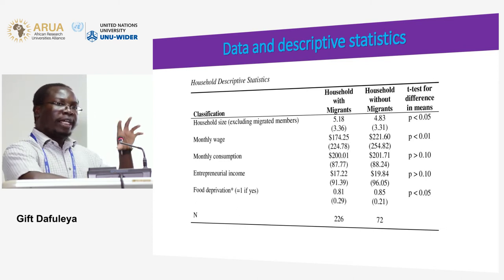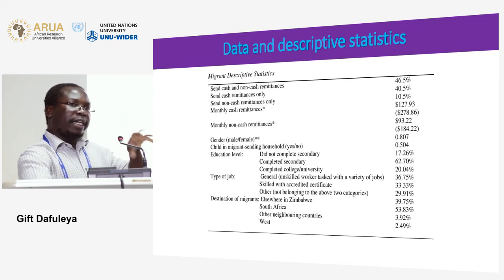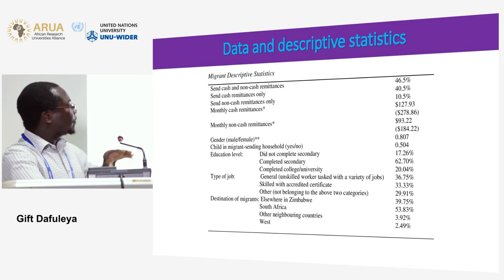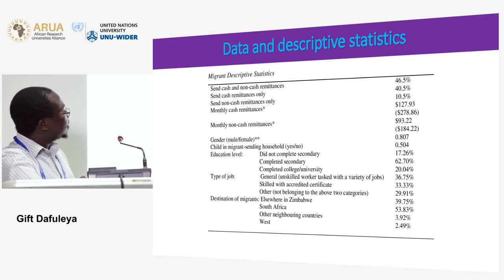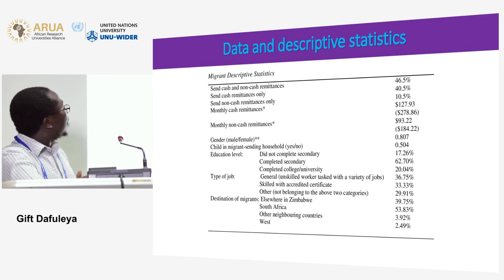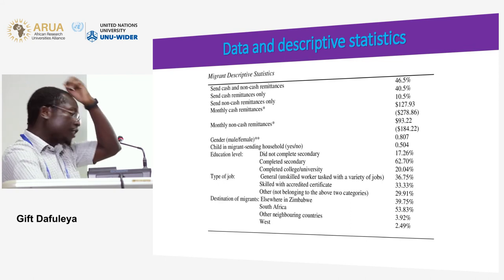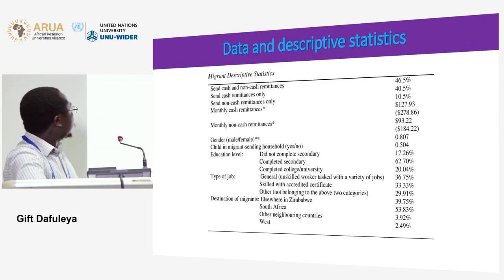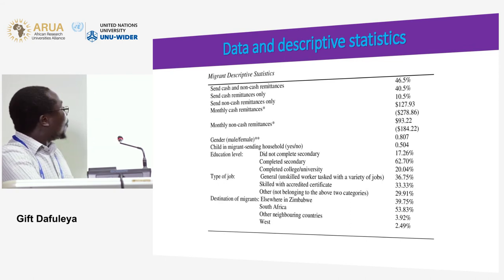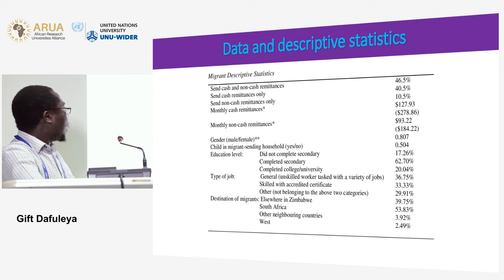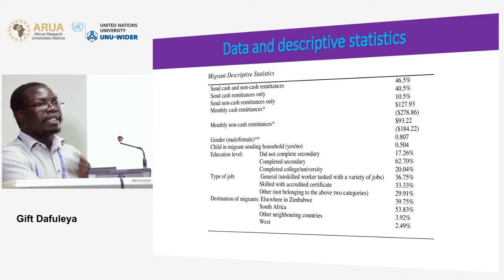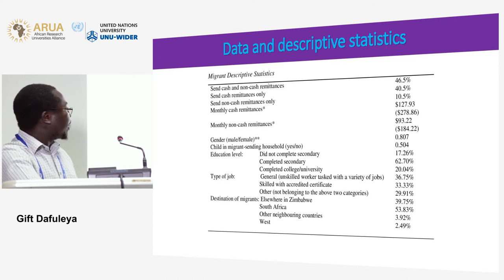Looking at individual migrant characteristics: slightly below half remit both cash and non-cash remittances. There are more females in migration than males, and most migrants are in South Africa.